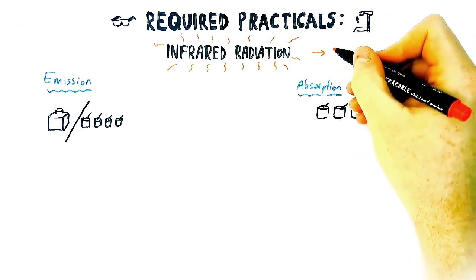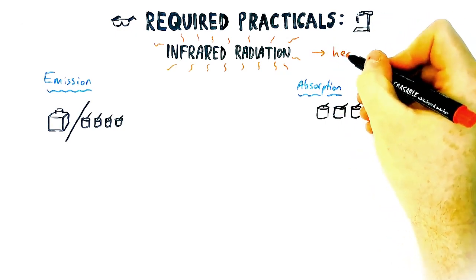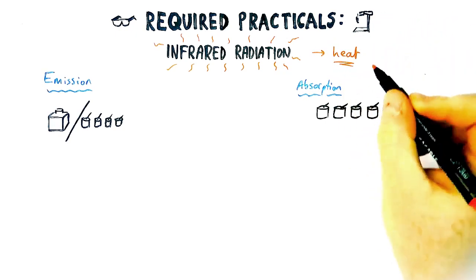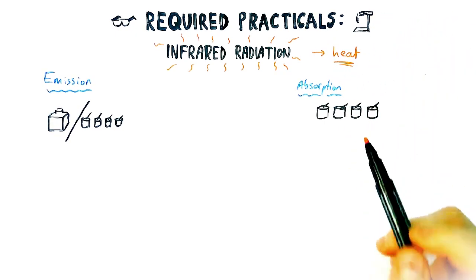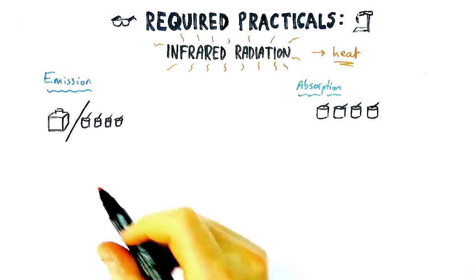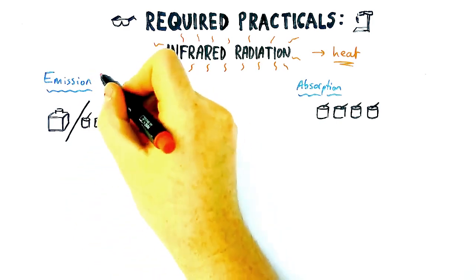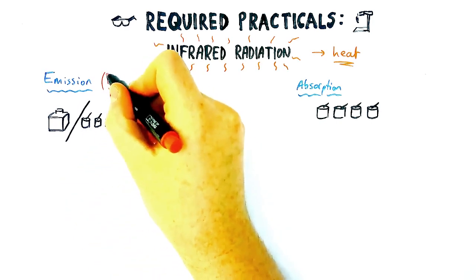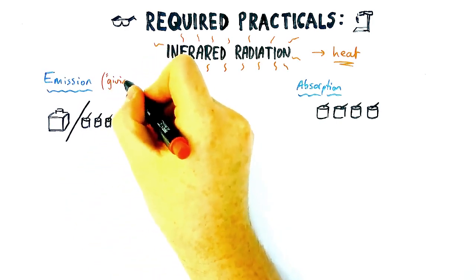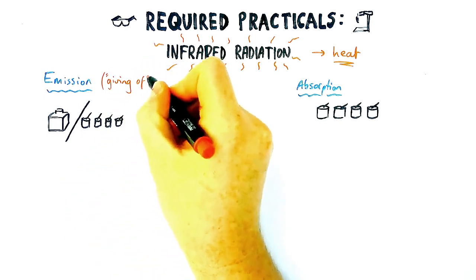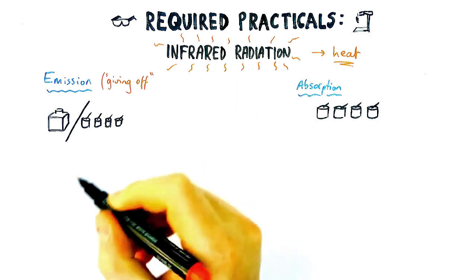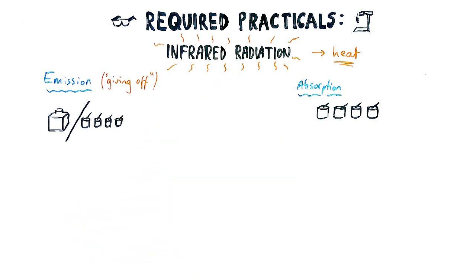We all know that wearing a hot t-shirt on a sunny day is a really bad idea, but how do we know that? How can we test it? This practical was all to do with infrared radiation, which is basically heat given off by objects above absolute zero.